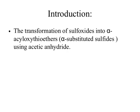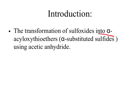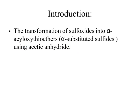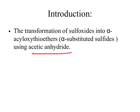This rearrangement is actually the conversion of sulfoxides into alpha-acyloxy thioethers. Thioether means instead of an oxygen atom, you will have a sulfur atom. These alpha-acyloxy thioethers are also known as alpha-substituted sulfides. This reaction is carried out in the presence of acetic anhydride. So, Pummerer rearrangement is the conversion of sulfoxides into corresponding sulfides in the presence of acetic anhydride.